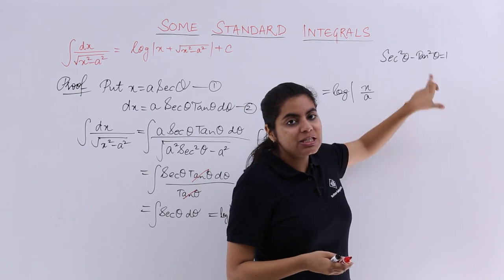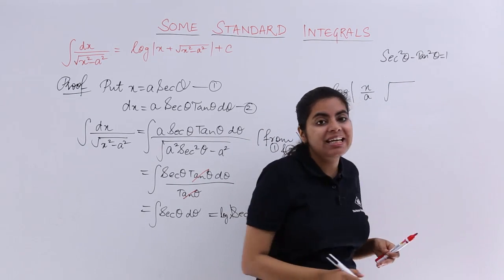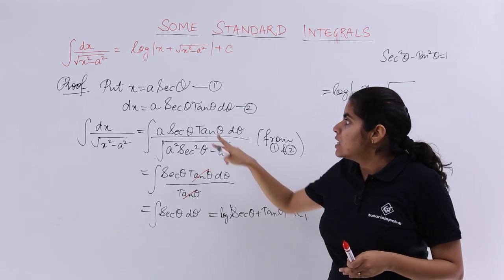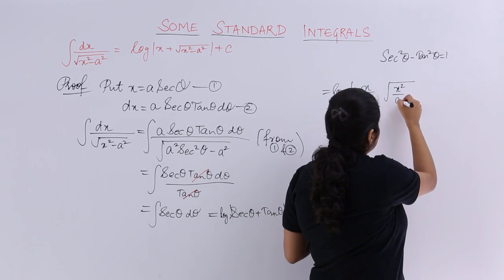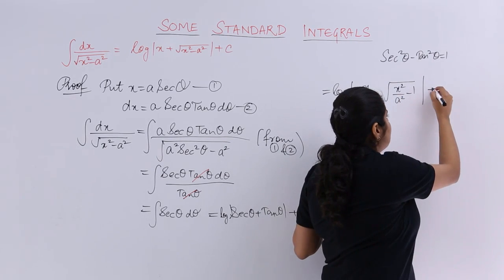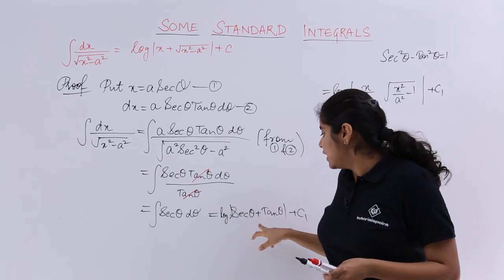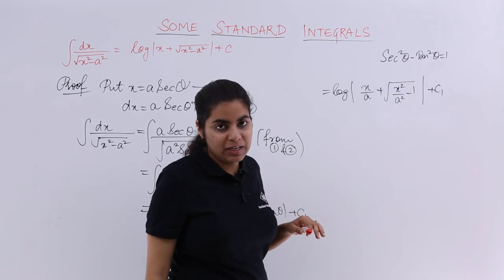Tan theta is equal to under root secant square theta minus 1. So it is under root secant square theta. Now secant square theta is x square upon a square minus 1, right? Plus c1 as it is. And what was the sign in between both of this? It was nothing but plus. That is the thing that we have done.